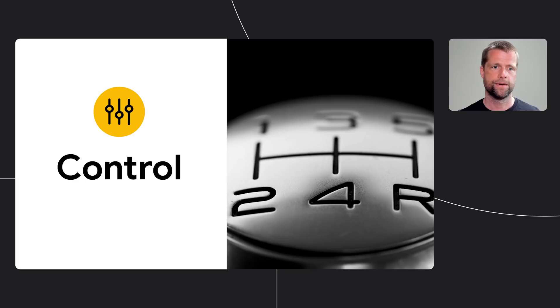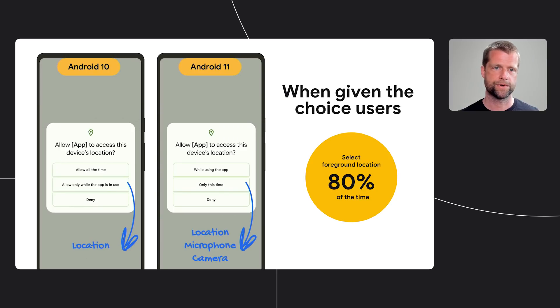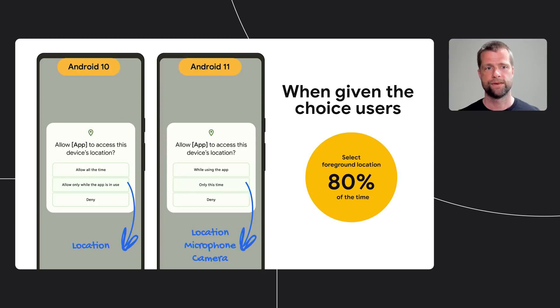Thanks, Sara. We also need to offer controls that give users means to make informed decisions about who can access their private data and how much access they're willing to share. It's about balancing choice with safe default behavior. Over the last two releases, we've made location permission fine-grained by first separating background and foreground access. We then added an Only This Time option, which we also extended to mic and camera permissions. And finally, we restricted access to background location. We're seeing that users are responding positively to these controls by choosing them more often.